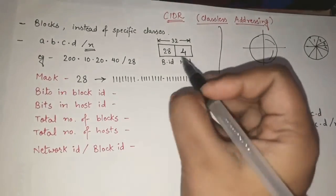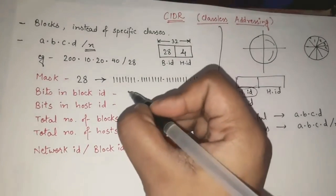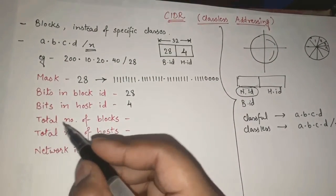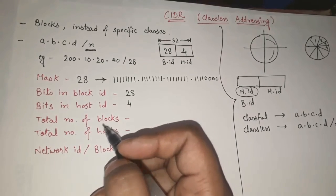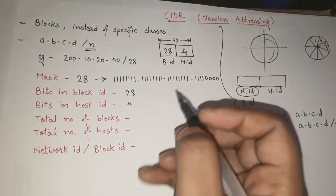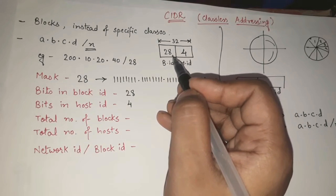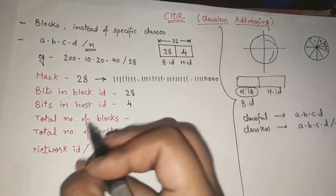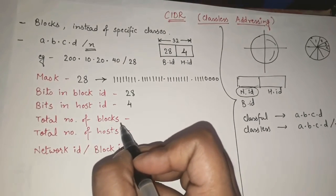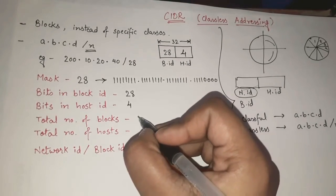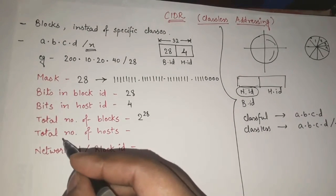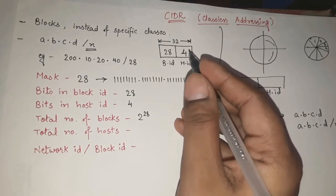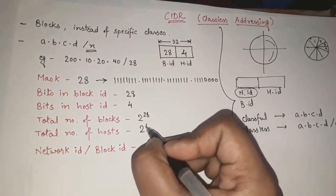Bits in the block ID are 28, and bits in the host ID are 4. The total number of blocks will be 2 raised to 28, and the total number of hosts will be 2 raised to 4.